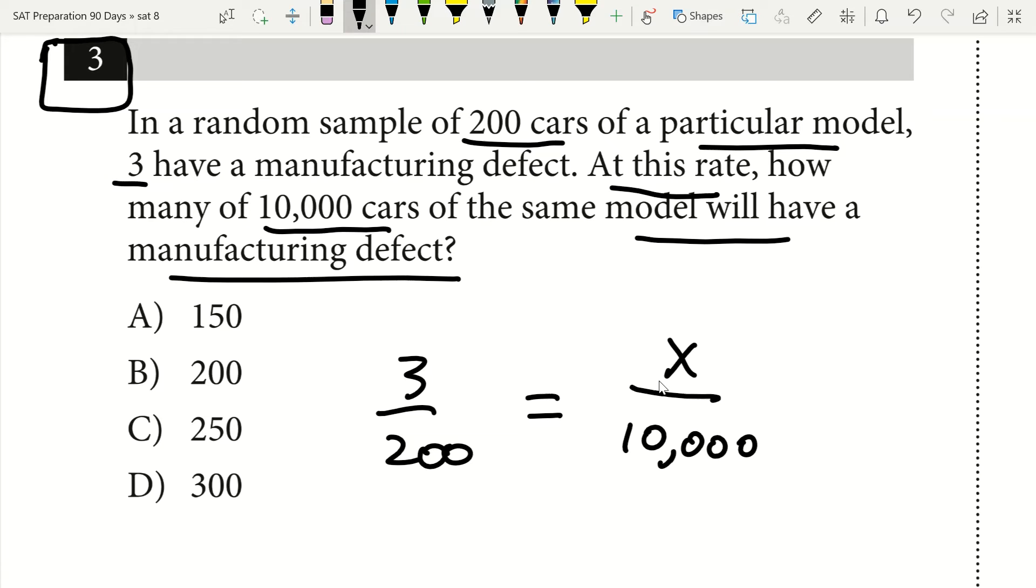What you'll notice right here is that I put my variable I want to solve for, x, which is the number of cars that will have a manufacturing defect out of 10,000, on top. Now why did I put that on top?